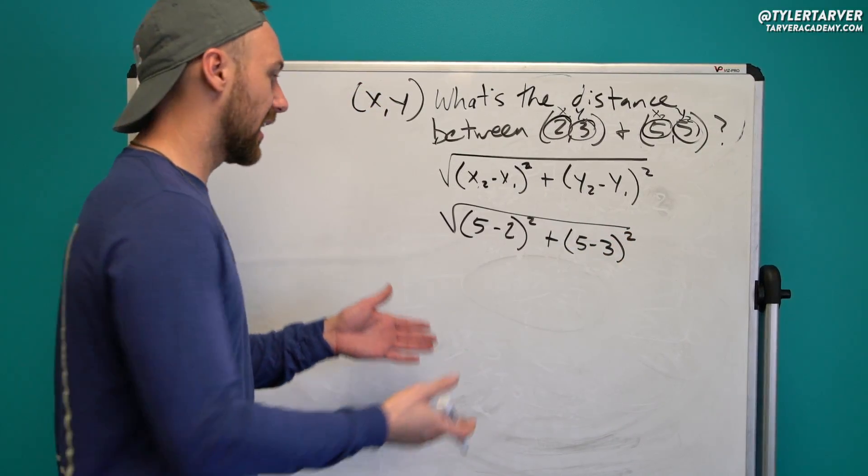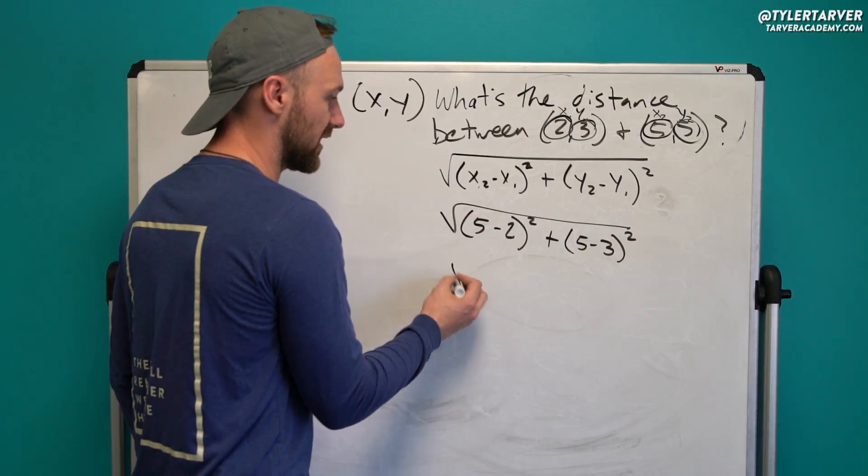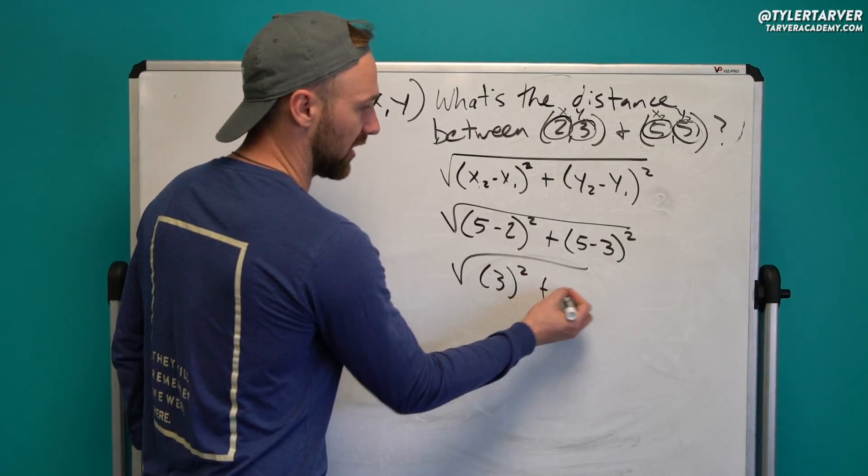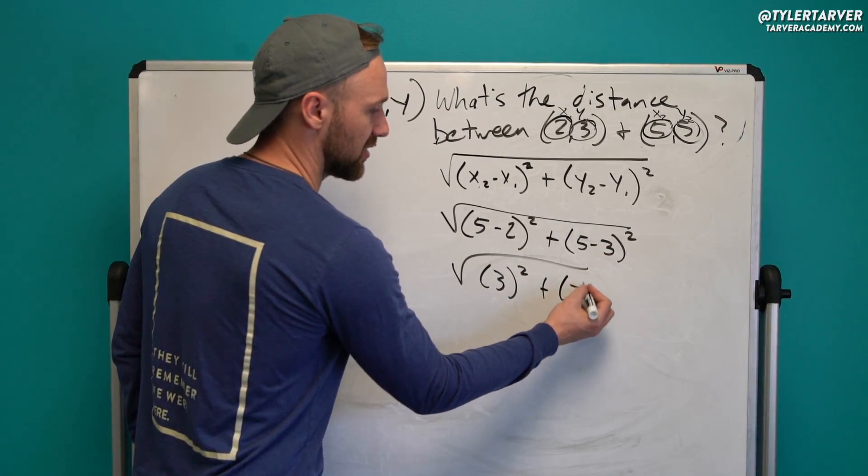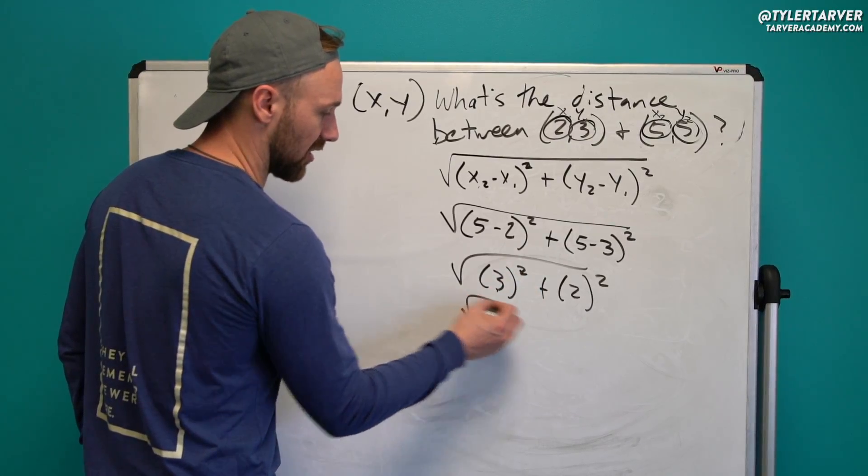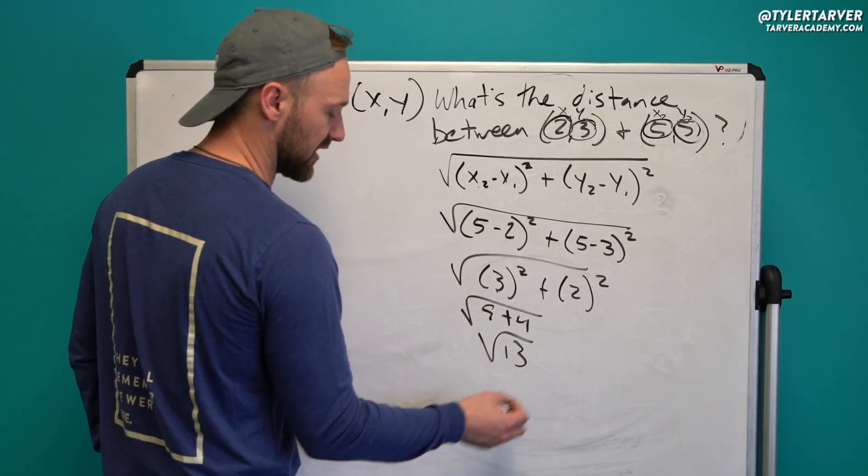Now we just simplify it. So we work in parentheses first. So five minus two is three squared plus five minus three is two squared. And then we do three squared is nine into the radical plus four. And then we've got square root of 13.